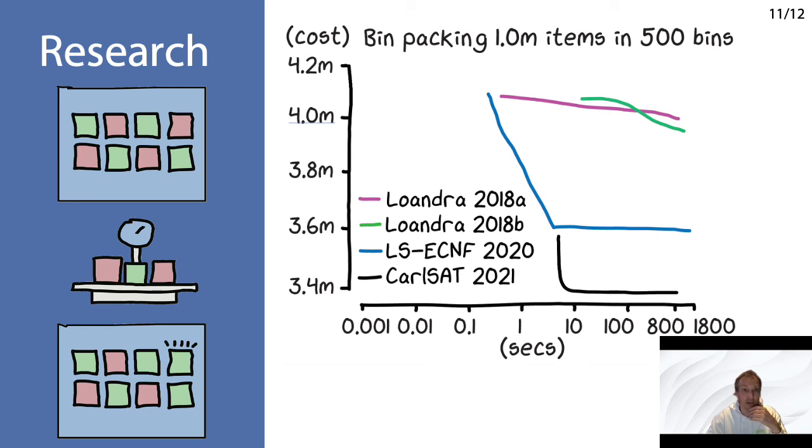If we find a more clever encoding, where we encode the problem more efficiently, still as Booleans but more efficiently, then we can gain quite a bit more speed, and this is what the LS-ECNF 2020 solver does.